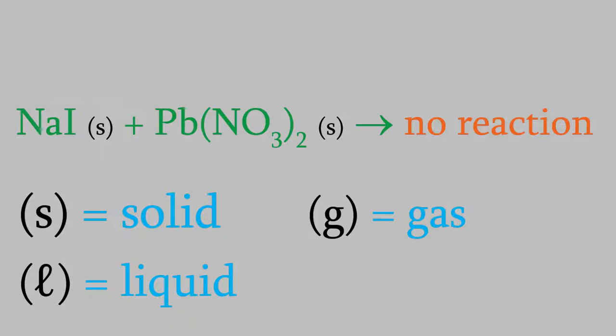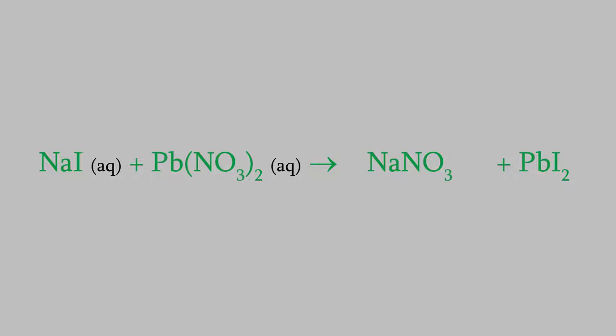But what about our situation, where we had dissolved a compound in water? That's not a pure liquid because it has something dissolved in it, so we shouldn't use the (l). Instead, when we have a compound dissolved in water, we use (aq). That lets us know that we're using an aqueous solution. So in our case, we combined aqueous solutions of sodium iodide and lead-2-nitrate.